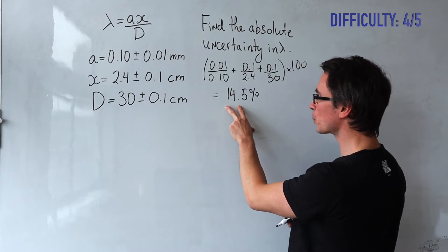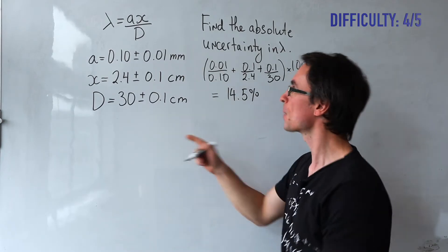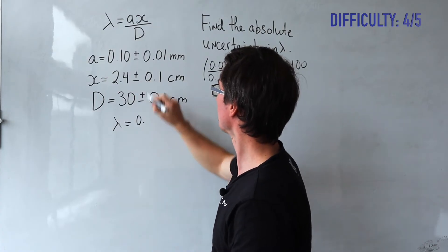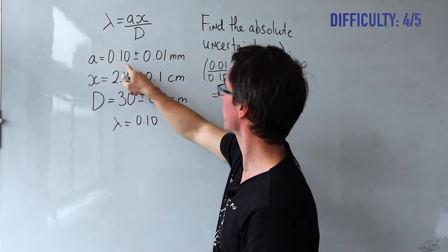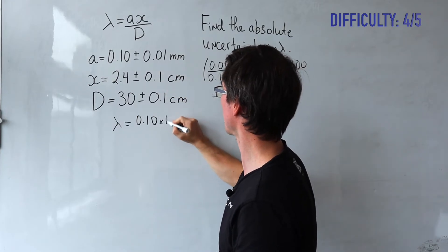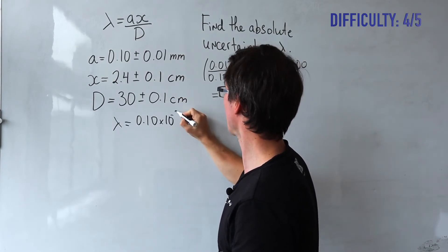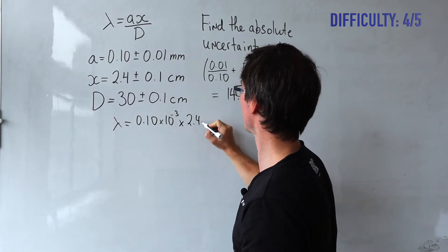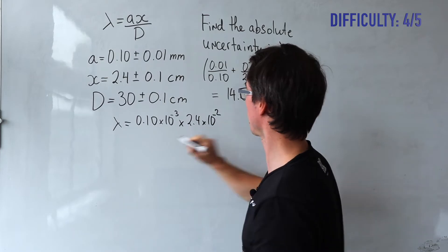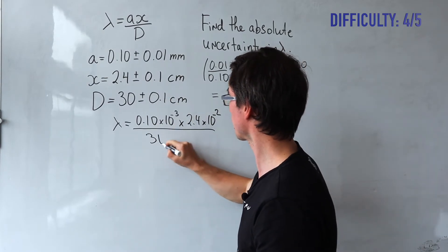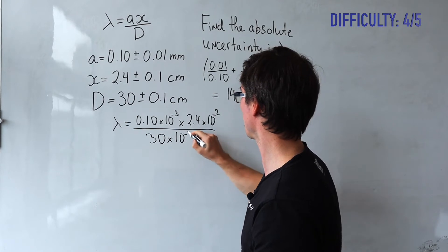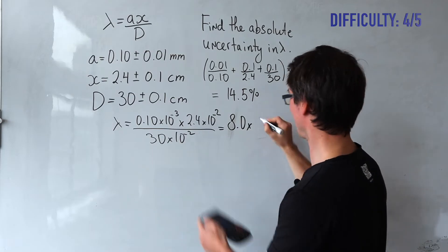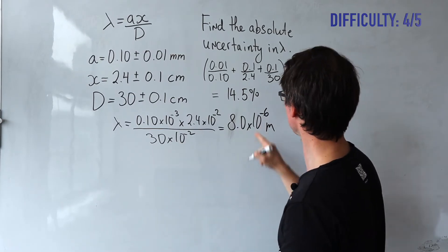We need to find 14.5% of the value of lambda, so let's plug in some numbers. Lambda equals A — which is 0.10 millimeters, so multiply by 10 to the power of minus 3 — times X, which is 2.4 centimeters, times 10 to the power of minus 2, divided by 30 times 10 to the power of minus 2. We get around 8.0 times 10 to the power of minus 6 meters.